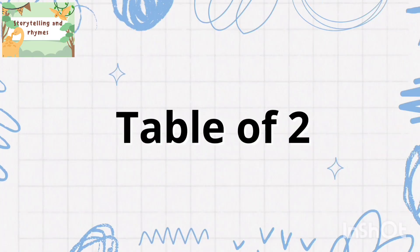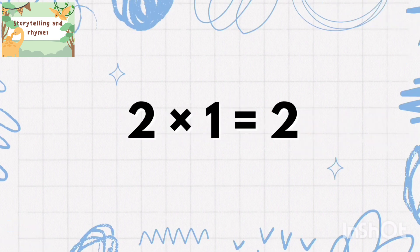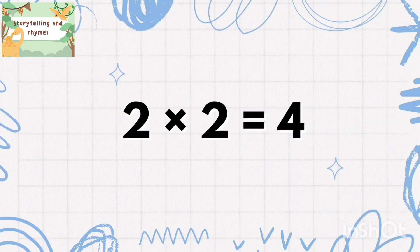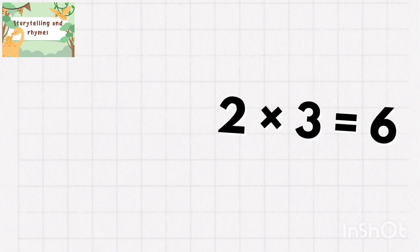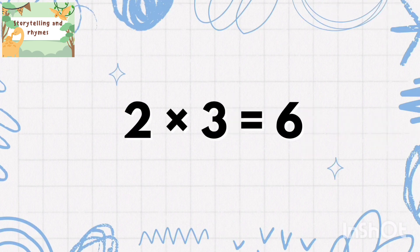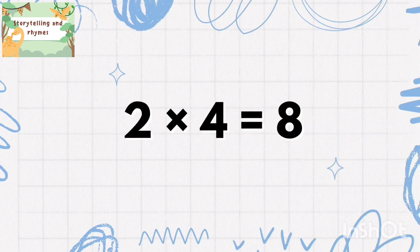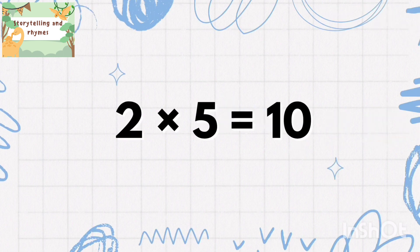Table of 2: 2 one's are 2, 2 two's are 4, 2 three's are 6, 2 four's are 8, 2 five's are 10.